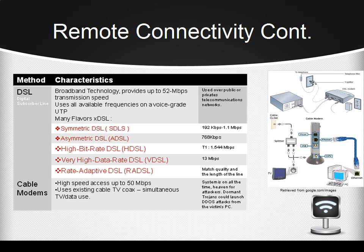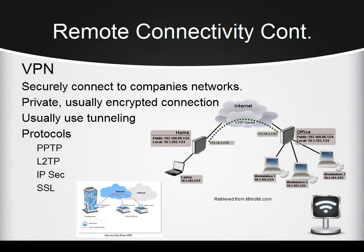Trojans can be used to launch distributed denial-of-service attacks from the victim's PC. A Virtual Private Network, or VPN, is a private connection over a public network that allows connecting to corporate networks. When a VPN is established, a private virtual point-to-point connection called a tunnel is created over the internet between two routers. VPN can use different protocols. Point-to-Point Tunneling Protocol, or PPTP, was created primarily by Microsoft — it is an extension of PPP and encapsulates PPP packets to transfer them through a tunnel over a public IP network.